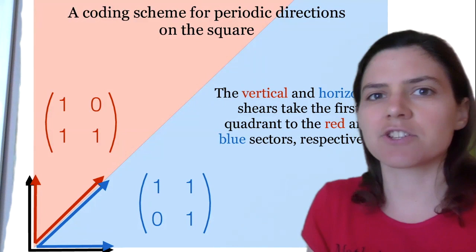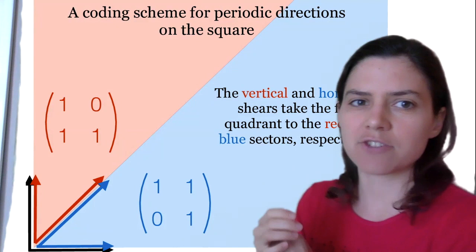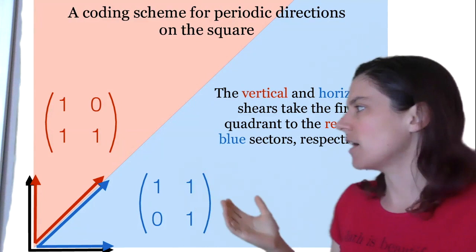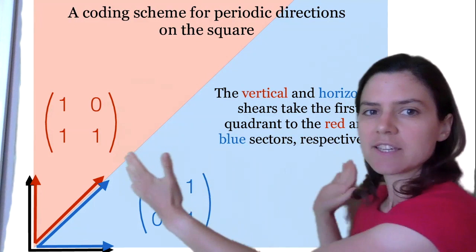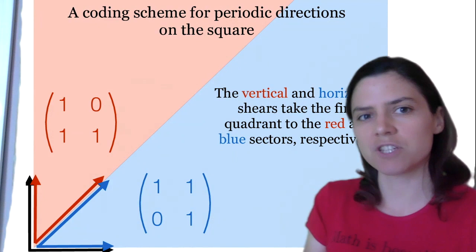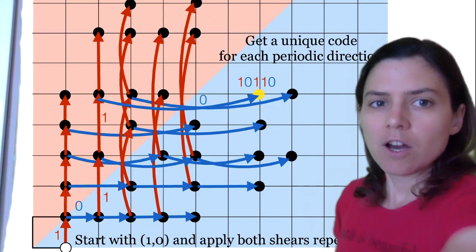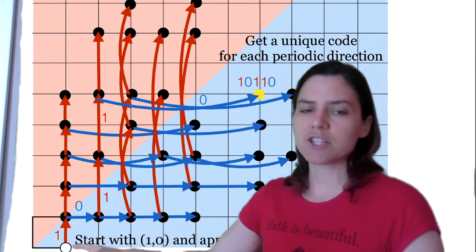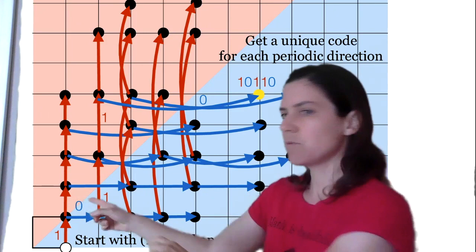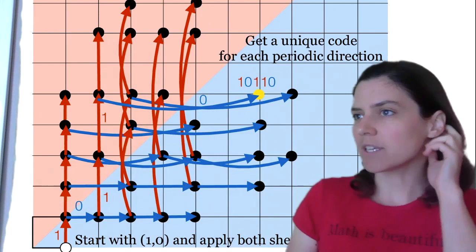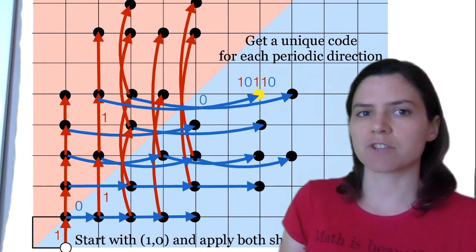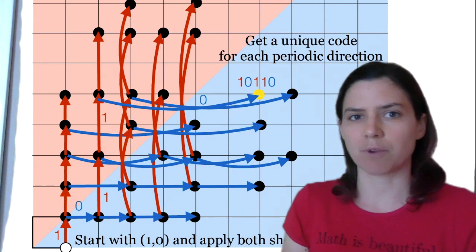Here's our coding scheme for periodic directions on the square. Our periodic directions are those with rational slope. We have the first quadrant and two shears: the blue one takes the first quadrant to just the blue sector, and the red one takes the whole first quadrant to just the red sector. Those are vertical and horizontal shears with determinant one. We start with just one point, (1,0), and we apply these shears repeatedly. Originally we get one new point, (1,1), then two new points, and so on. If we keep doing this forever, we get all of the periodic directions on the square — all directions with rational slope, or integer vectors that are relatively prime.